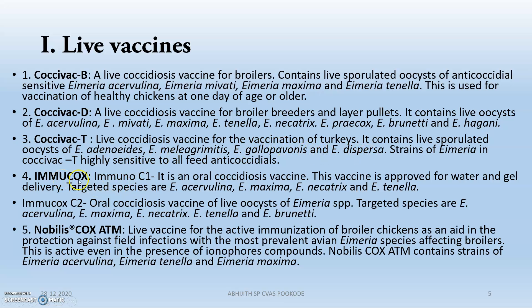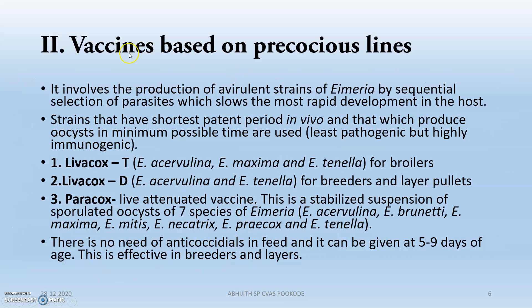Next is ImmuCox. ImmuCox C1 is an oral coccidiosis vaccine — you will be mixing it with water or food for gel delivery. Next is ImmuCox C2, also an oral vaccine. Then there is Nobilis-Cox-ATM, where ATM signifies acervulina, tenella, maxima. It contains strains from the live vaccine strains of acervulina, tenella, and maxima.